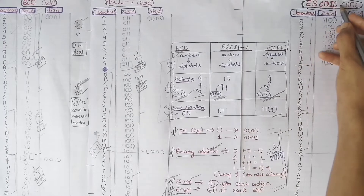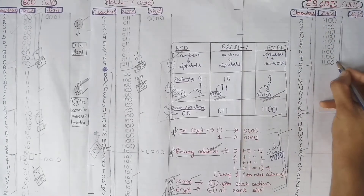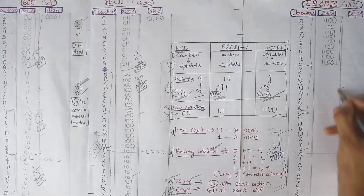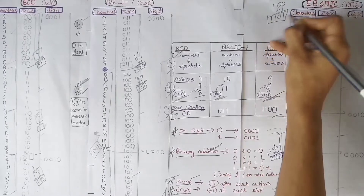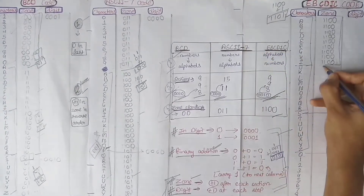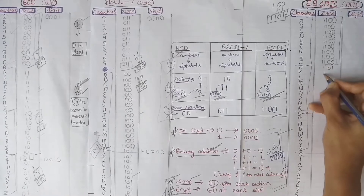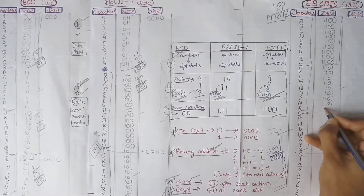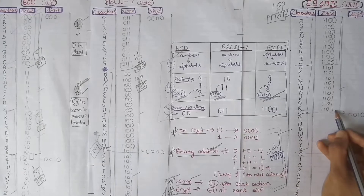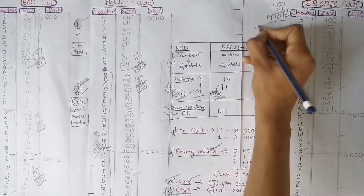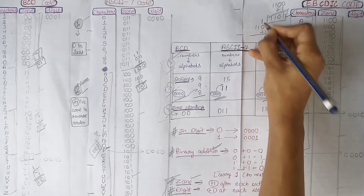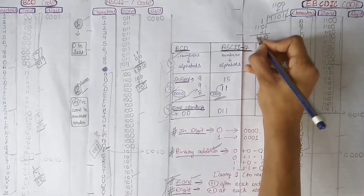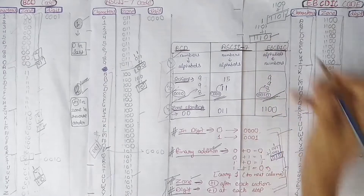For the EBCDIC code: we add plus 1 to the current value and write the result during all of the next section. So 1100 plus 1 becomes 1101. We write 1101 during all of that section. Then again adding plus 1: 1101 plus 1 becomes 1110, and we write 1110 during all of the next section. In this way, we have completed the zones of all three codes.